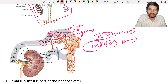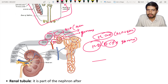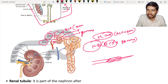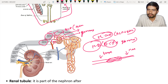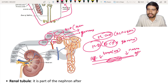The glomerulus helps in filtration. The afferent arteriole has a larger diameter, and the efferent arteriole has a narrower diameter. So comparing the two: the afferent arteriole is wide, while the efferent arteriole is narrow. Blood flows from the afferent arteriole through the glomerulus and exits via the efferent arteriole.